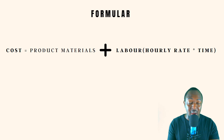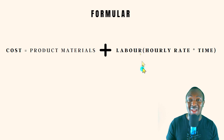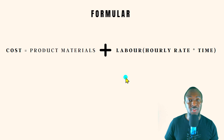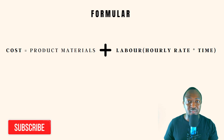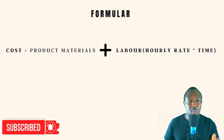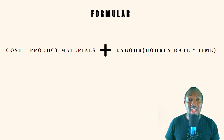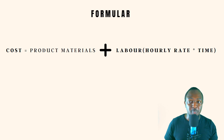To help us determine the price we will charge our customers for our products, we first need to calculate the cost involved. The cost is going to be equal to your product materials plus your labor. Product materials refers to how much you bought your raw materials for, and any shipping, packaging, marketing, rental properties, and extra things involved. You have to make sure you have all these costings written down on paper.